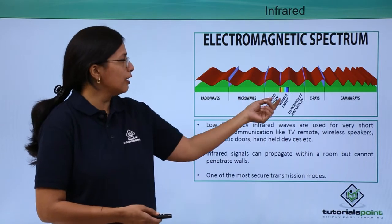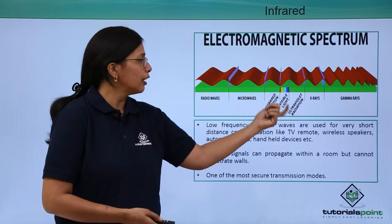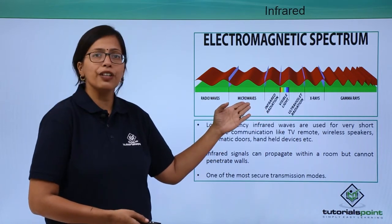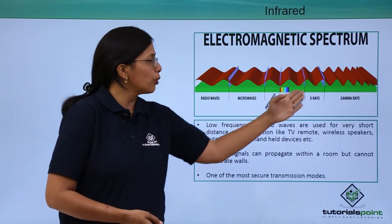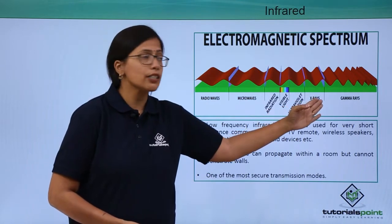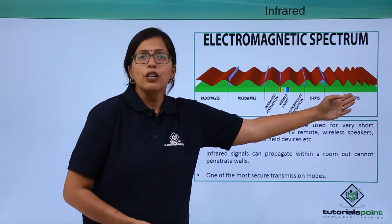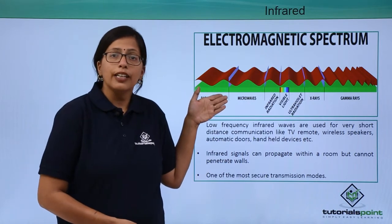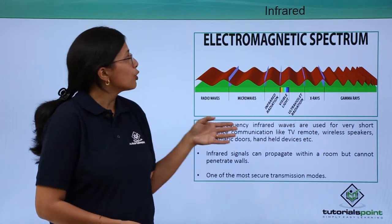As you can see here, the visible light has a very small frequency range. Less than this is the infrared, then microwaves, then radio waves. More than visible light are the higher frequency UV rays, X-rays, and gamma rays. All these rays can be used for transmission of data.